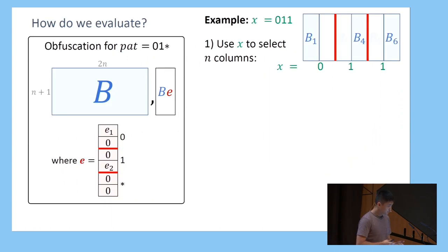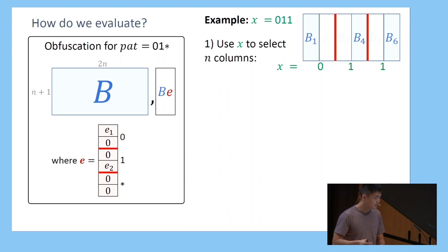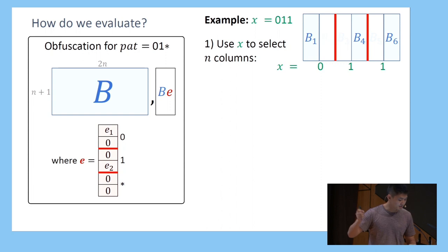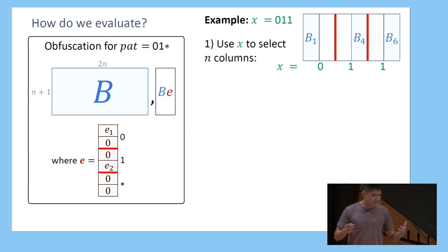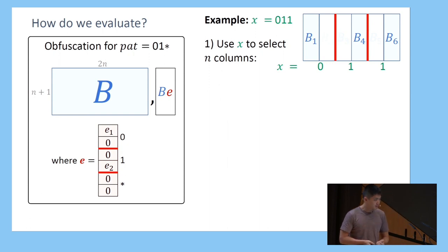Given this program, how do we evaluate? Let's work through an example. Let's say I'm giving you the obfuscation of the pattern 0, 1, *. You get to see B and B times E but you don't get to see E. Let's evaluate for x = 0, 1, 1 — an input that should be accepted since 0, 1, 1 matches the pattern 0, 1, *.